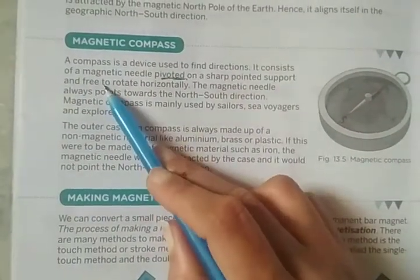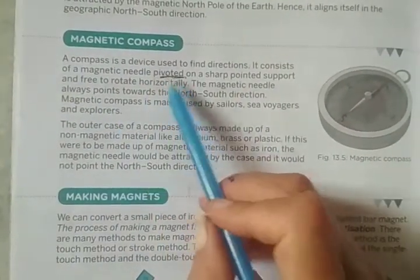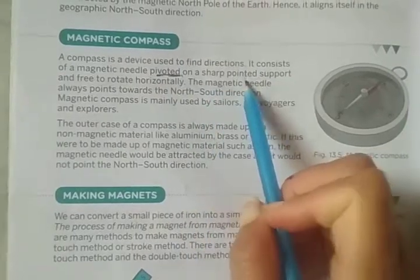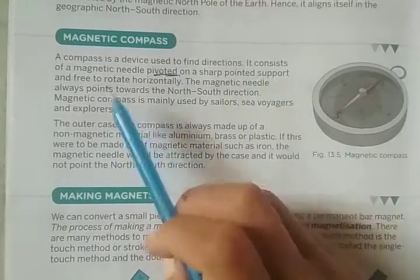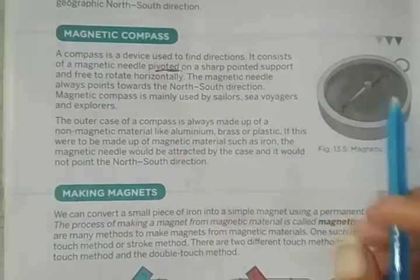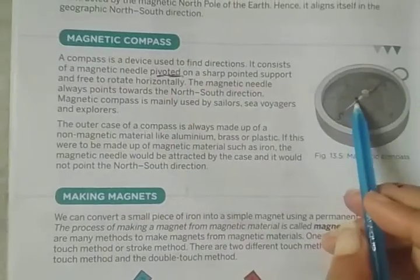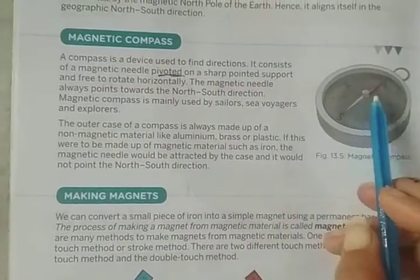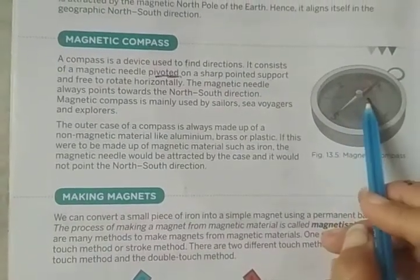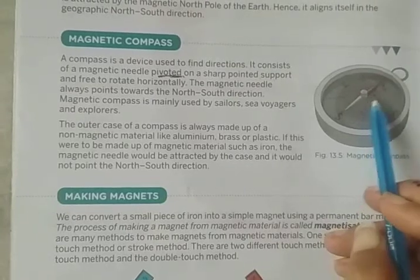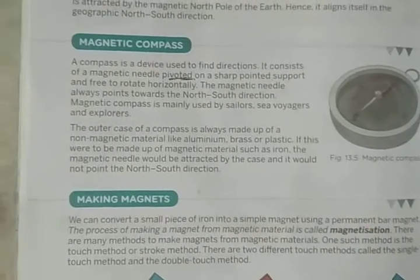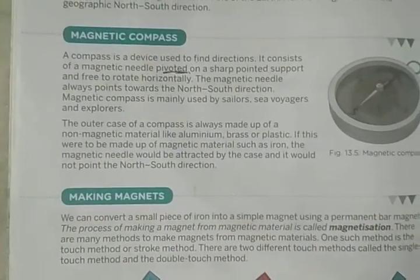The compass consists of a magnetic needle pivoted on a sharp pointed spot, and it is free to rotate horizontally. Pivoted means the needle is fixed from the center but can rotate freely, like the hands of a clock.